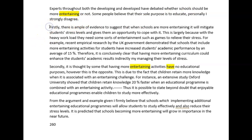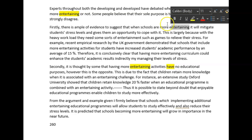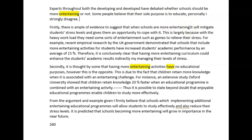Firstly, when you're into your paragraphs: 'there is ample evidence to suggest that when schools are more diverting' — you could say 'enjoyable,' 'varied,' or 'interesting' — 'it will mitigate students' stress levels and give them ways of coping with it.' This is largely because with such a heavy workload, a range of diverting activities such as games are needed. Try to step back from saying 'they' — use the passive tense instead.